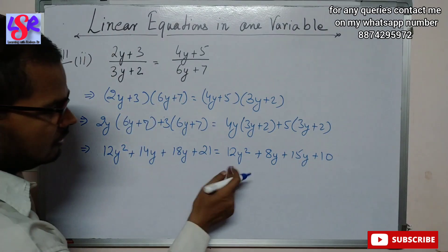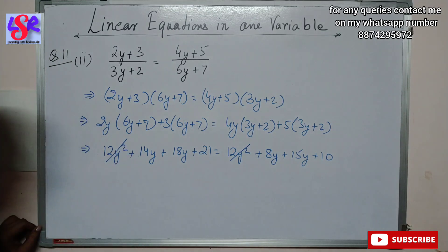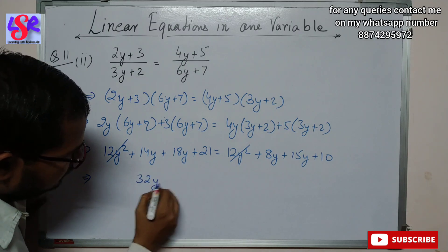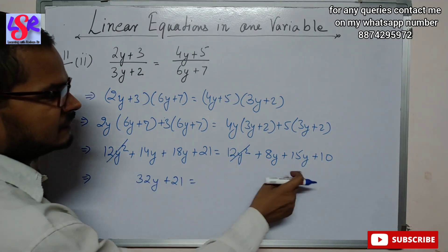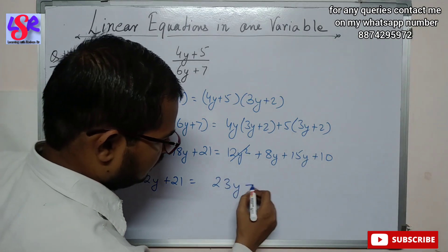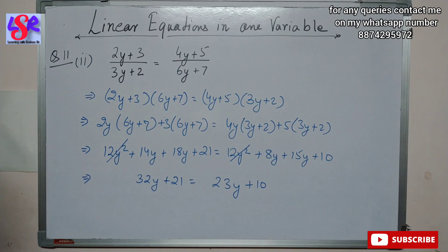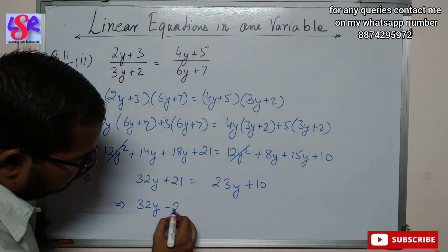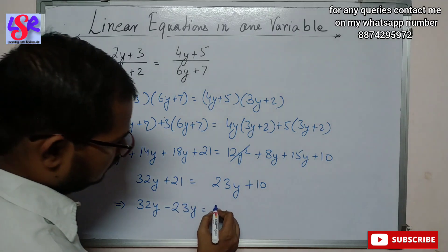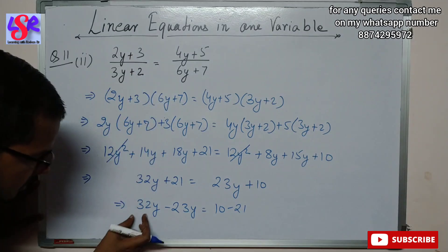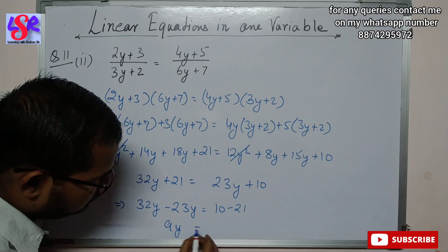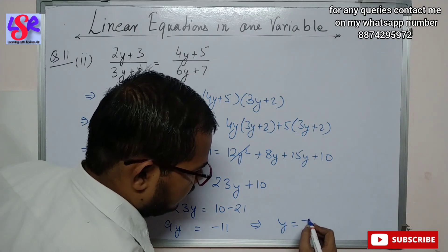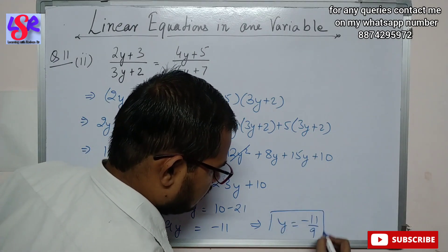The 12y² terms cancel from both sides. Combining like terms: 14y + 18y = 32y, and 8y + 15y = 23y. So 32y + 21 = 23y + 10. Rearranging: 32y - 23y = 10 - 21, giving 9y = -11. So y = -11/9 as the answer.